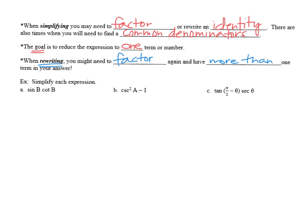So you may need to flip back and forth, sorry about that, to identify which trig expressions can help you simplify these expressions. When we're asked to simplify, we want one trig term in our final answer. So let's take a look at example A. Sine B times cotangent B.